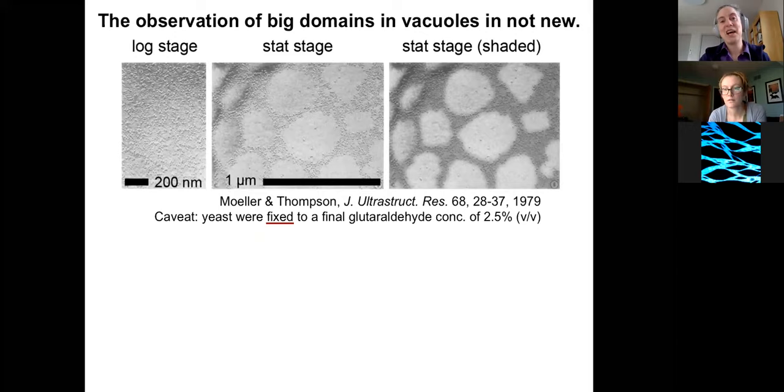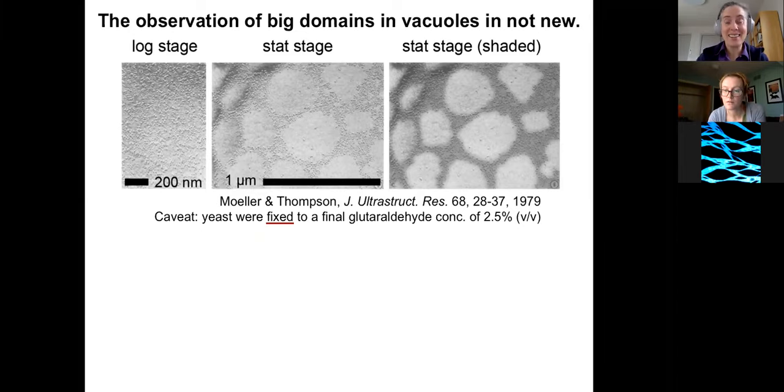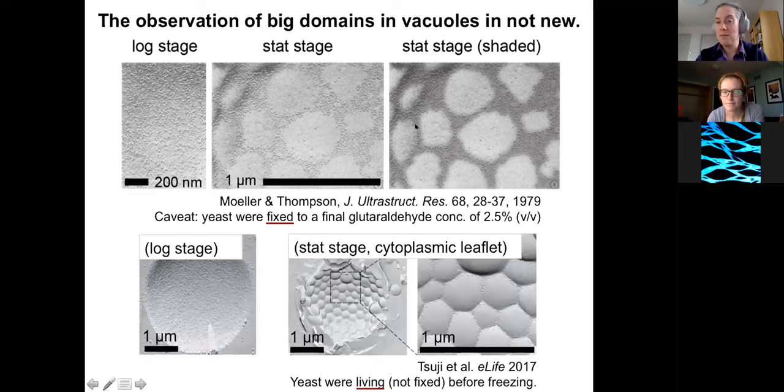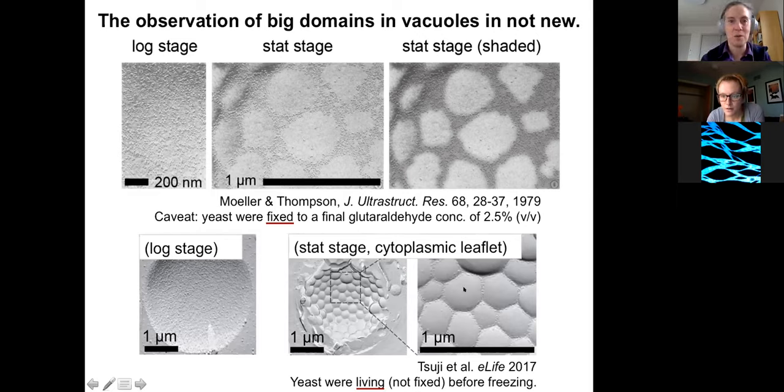Now, I want to say that this observation of domains in membranes was not new. Here's results back from 1979. This is freeze fracture electron microscopy of the vacuole membrane. Starting on the left-hand side, there's the log phase, and then the middle has the stationary stage of that growth, and you can see that there are cases in what we're looking at. Those little stipple marks are places where there are big protein complexes. These little stipple marks of these protein complexes are excluded from these regions in the middle, which we've shaded on the right to help you see them better. The same sort of work has been done more recently in a beautiful paper by Tsuji et al., and now you can really see those domains bulging into the vacuole when it's in the stationary stage versus a uniform log stage vacuole.